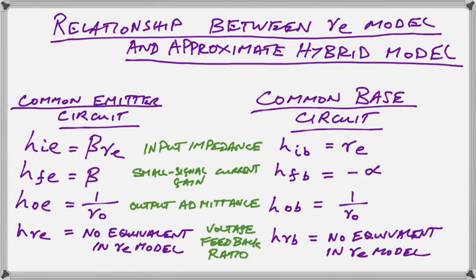Now, HOE is an admittance or conductance, basically, and RO is a resistance. So they're reciprocals of each other. HOE is 1 over RO, and RO is 1 over HOE. So that's the difference between conductances and resistances.